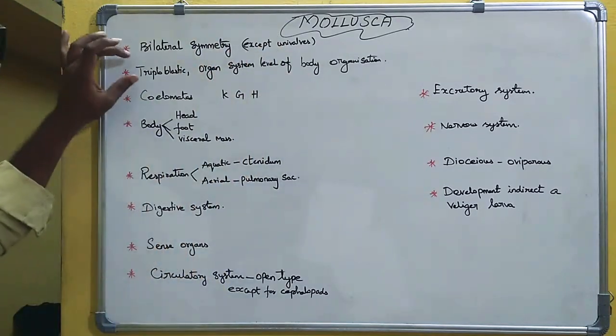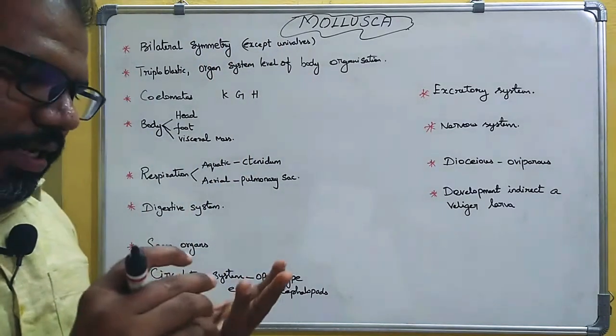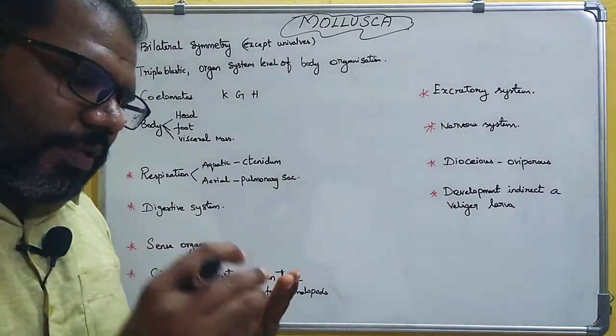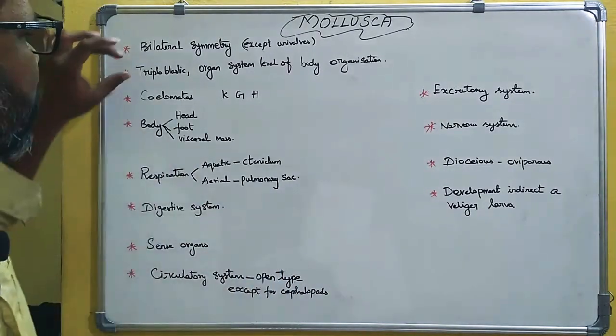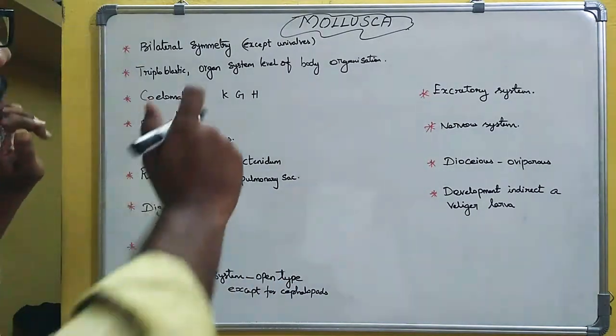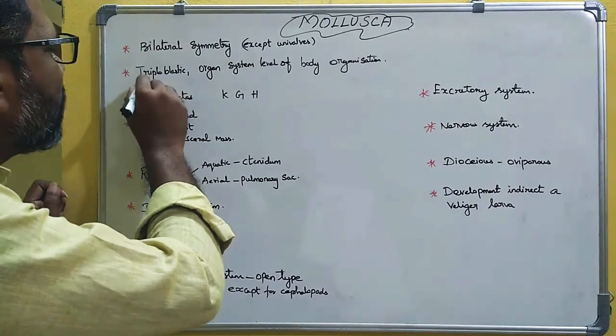Mollusca are triploblastic organisms. The body is formed from three germ layers: ectoderm, endoderm, and mesoderm. So the body is formed from all three germ layers.